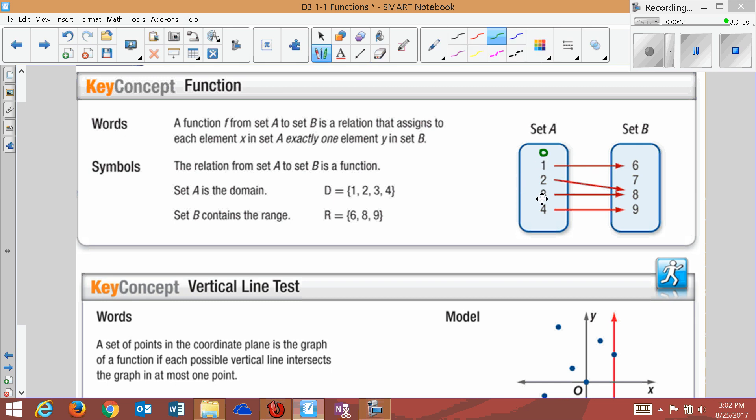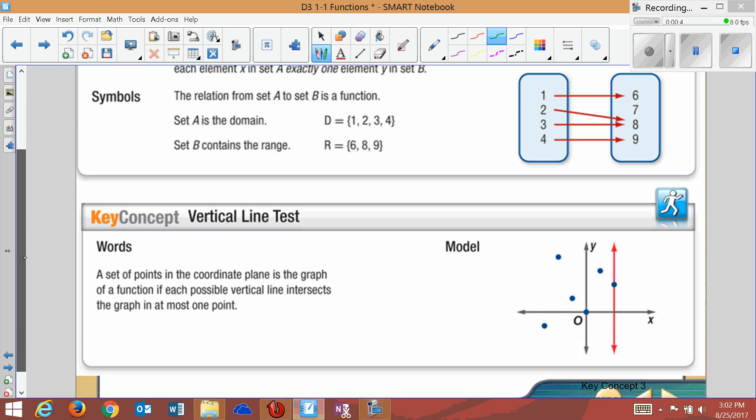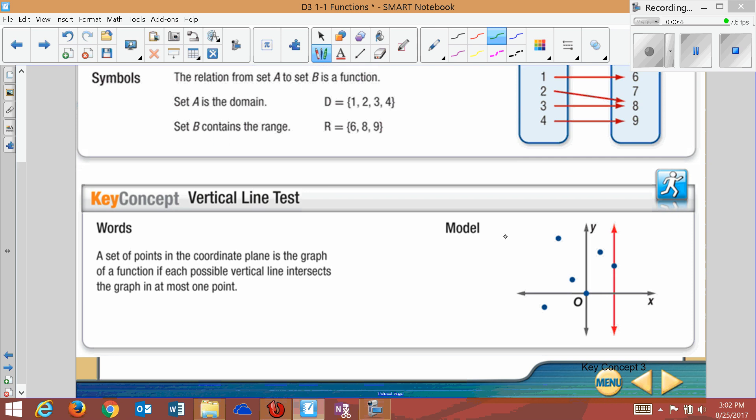You cannot have that. Each member of the domain must have one and only one member of the range. We can use a vertical line test, a graph, to determine if something is a function. This is a function because if I pass a vertical line through these dots